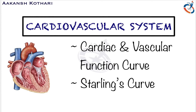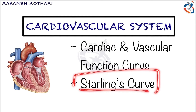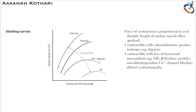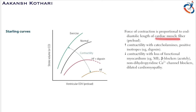Let us first talk about the Starling's curve. Now what is Starling's law? Starling's law states that the force of contraction is directly proportional to the end diastolic length of the cardiac muscle fiber. The end diastolic length of the cardiac muscle fiber is equal to the preload.